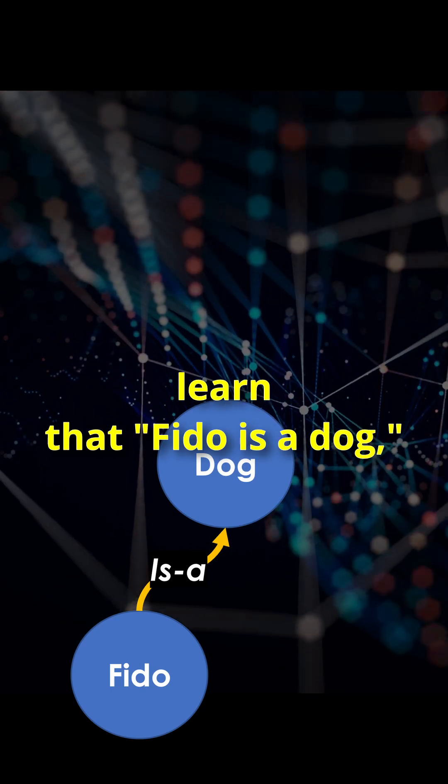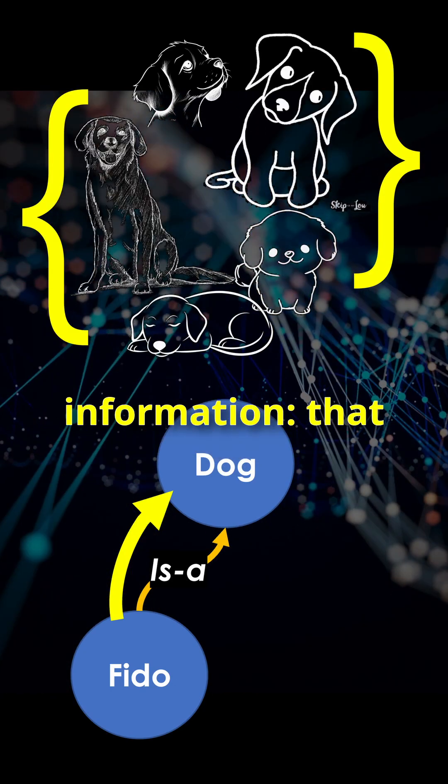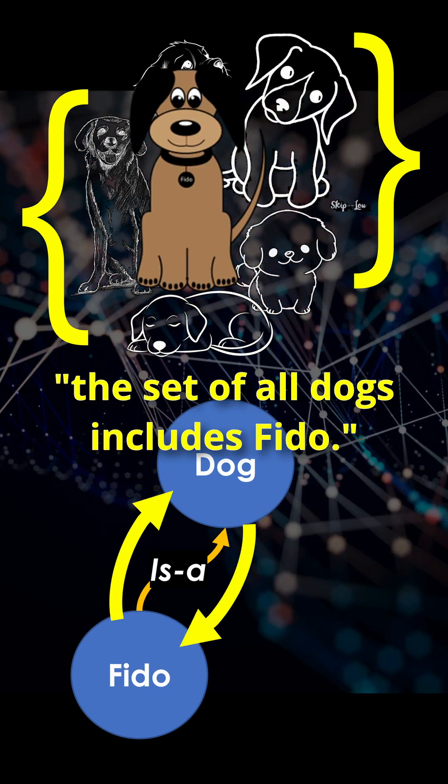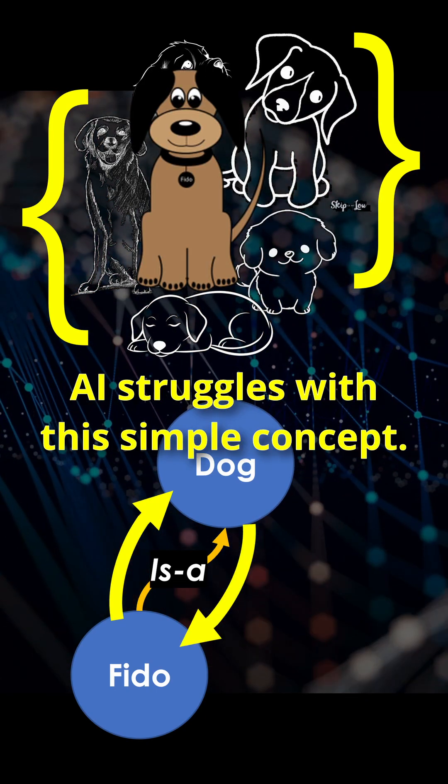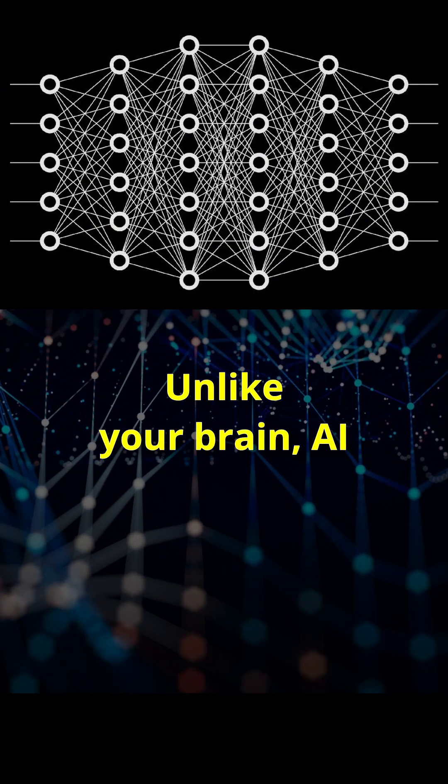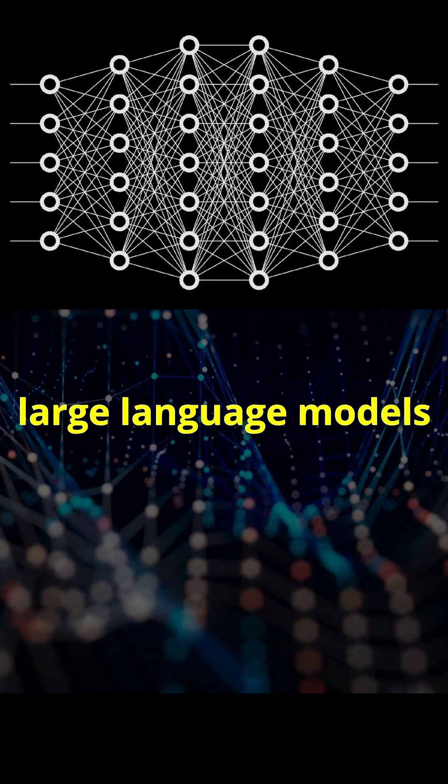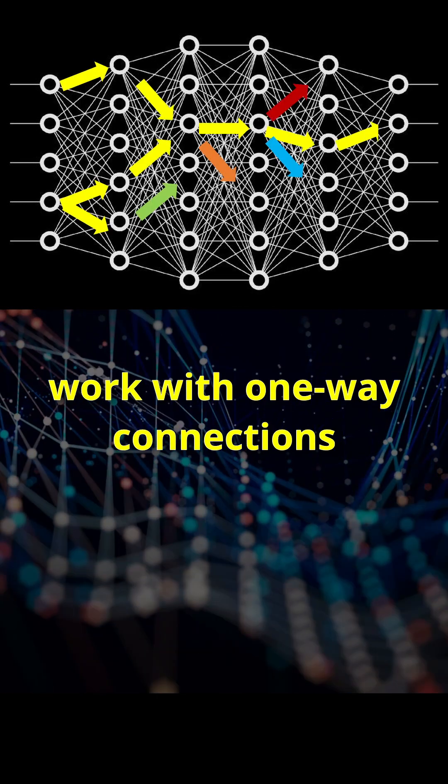If you learn that Fido is a dog, you instantly know the reverse information that the set of all dogs includes Fido. AI struggles with this simple concept. Unlike your brain, AI models like neural networks and large language models work with one-way connections.